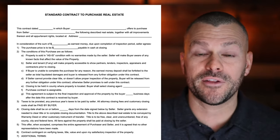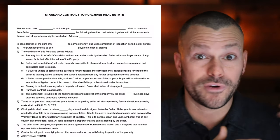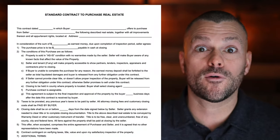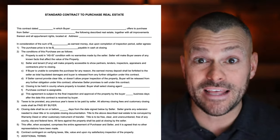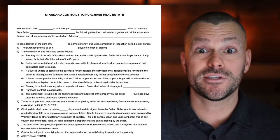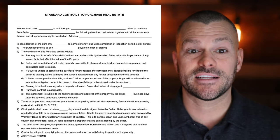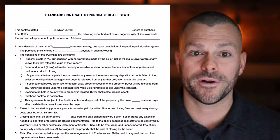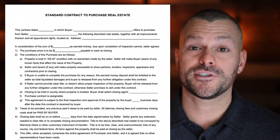Most of those were for wholesaling, but some we've actually closed on and purchased — either relisted on the MLS and wholetailed it, fixed up and flipped for a profit, or fixed up and rented out as a rental property. There are even more advanced steps like the BRRRR method. Regardless, this is the contract we've used and it is very simple and straightforward. It starts off by stating 'Standard Contract to Purchase Real Estate.' Keep it simple, don't overthink it.